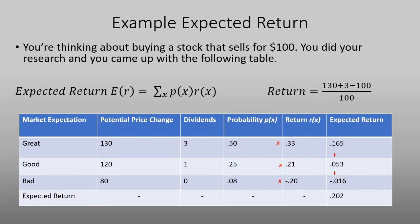So the next thing you have to do is figure out that return. And if you look above the table, you'll see how that's done for great. You add $130 for the potential price change, the $3 for the dividend, and subtract the price that it sells for 100, and then divide that by 100. And that will give you a return of 0.33.